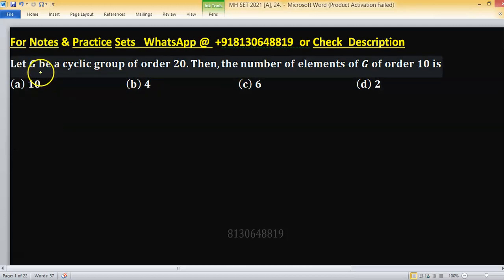In this given problem, G is a cyclic group of order 20. We need to find the number of elements of G of order 10.